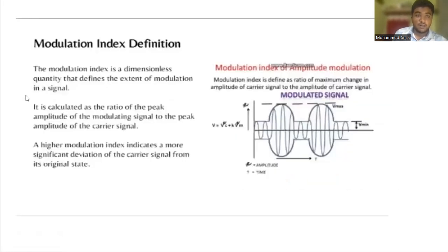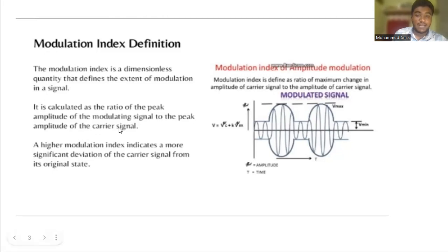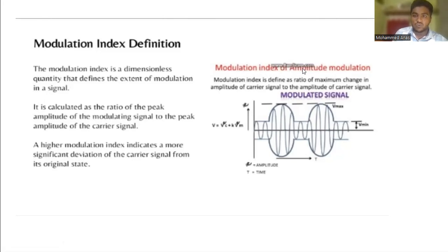The modulation index definition: the modulation index is a dimensionless quantity that defines the extent of modulation in a signal. It is calculated as the ratio of the peak amplitude of the modulating signal to the peak amplitude of the carrier signal. A higher modulation index indicates a more significant deviation of the carrier signal from its original state. The modulation index depends on the amplitude of the carrier signal. This is the modulation index of amplitude modulation.